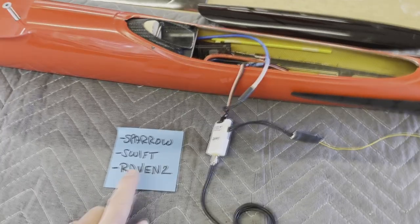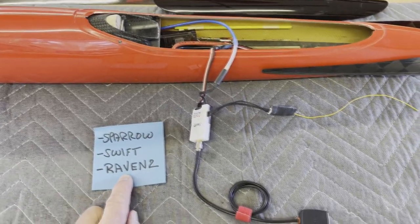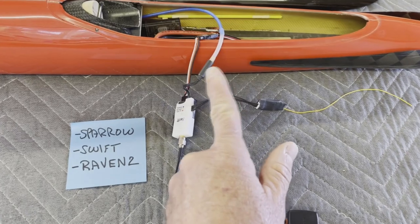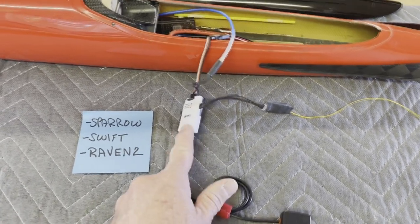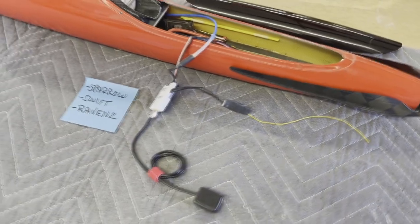The nice thing about the Raven 2 is that the antenna, the RF module, and the digital converter is actually built right inside of the unit itself. And it's not a whole lot larger either.